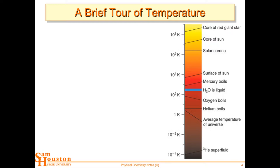Going the other direction, oxygen boils at slightly less than 100 Kelvin, and helium boils almost down to 1 Kelvin. The average temperature of the universe — we have some stars, but a lot of cold space. If you look at the universe as a whole, the average temperature is about 4 Kelvin. We see that from the cosmic background radiation — by looking in the microwave region and converting that microwave energy to Kelvin. That's the afterglow of the initial expansion of the universe.